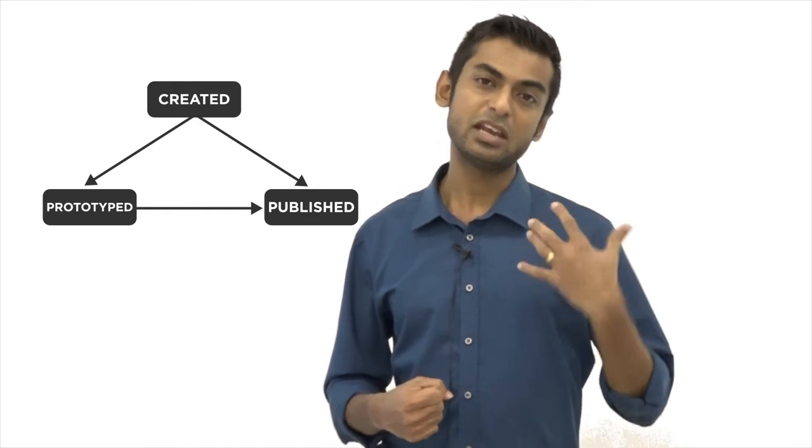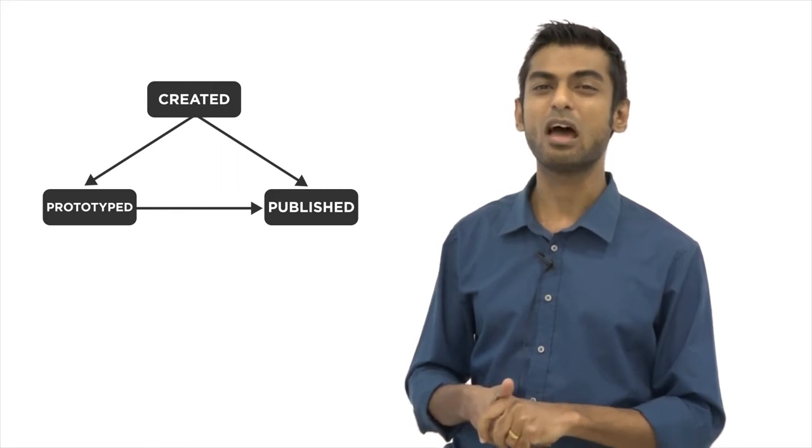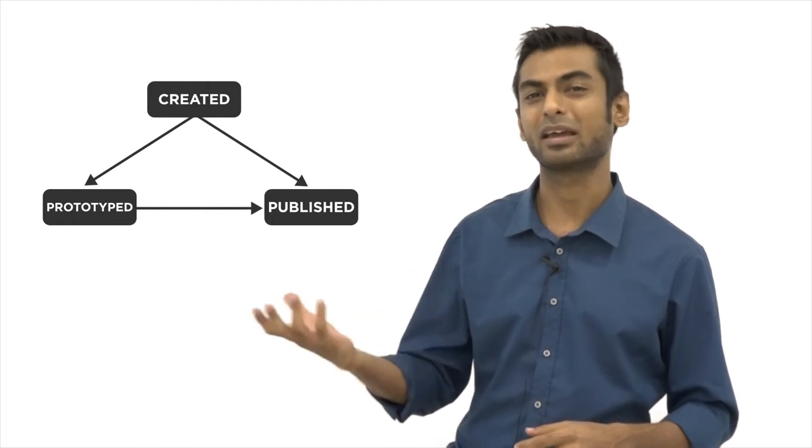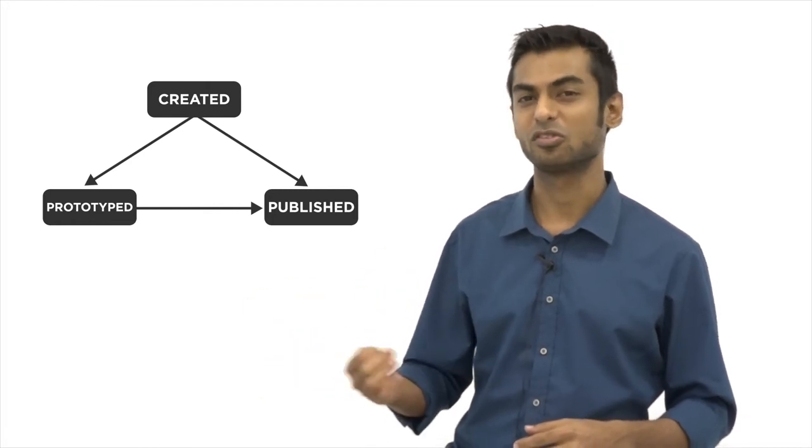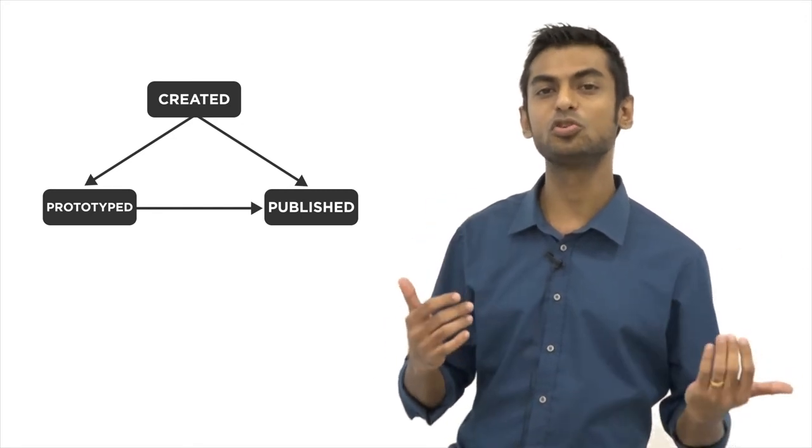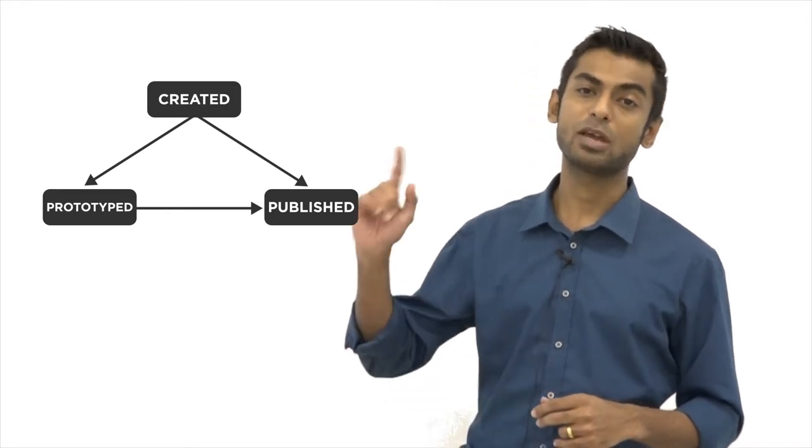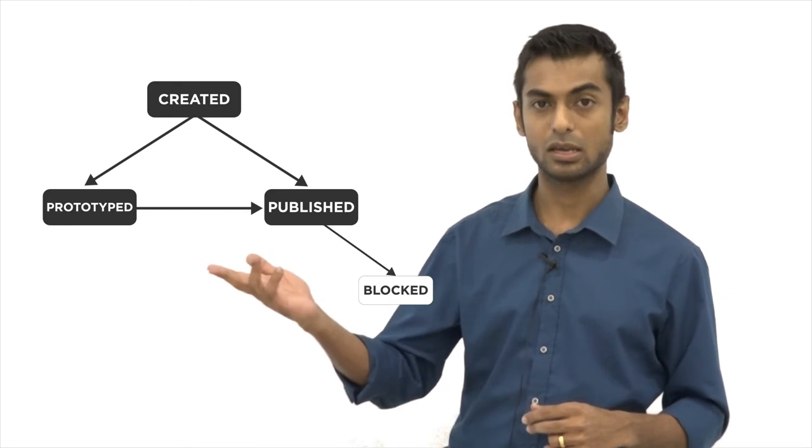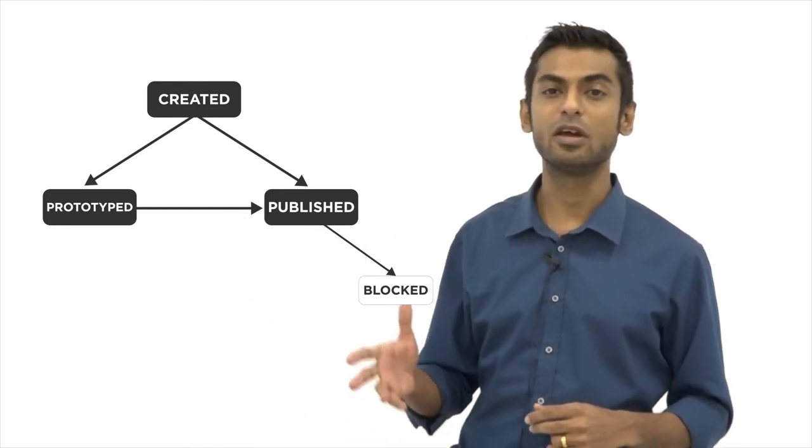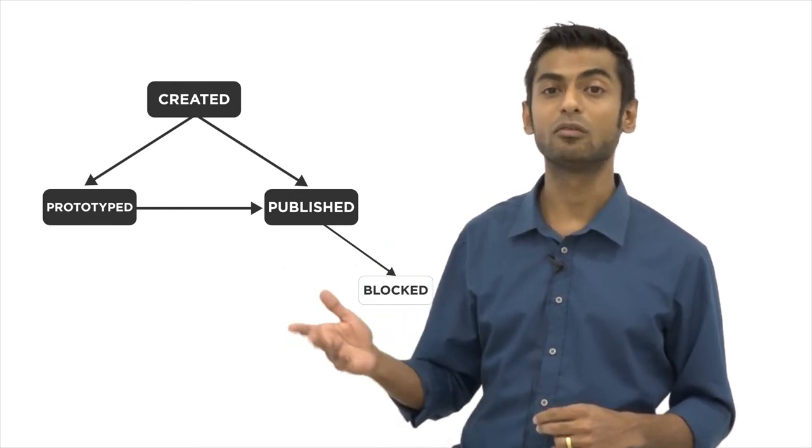And in addition to that once you got an API that is in published state and if you have an issue such as for example you've got a particular API backend that is misbehaving for whatever reason and you just want to temporarily prevent external users from invoking your API. You can actually move the API proxy to the blocked lifecycle state and what this will do is it will temporarily prevent the API proxy from being invokable from the outside world.